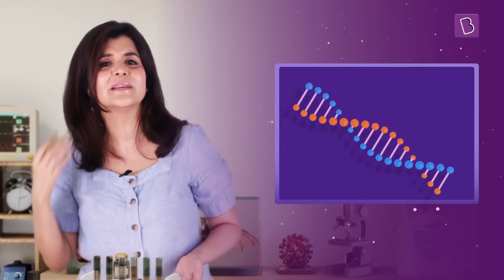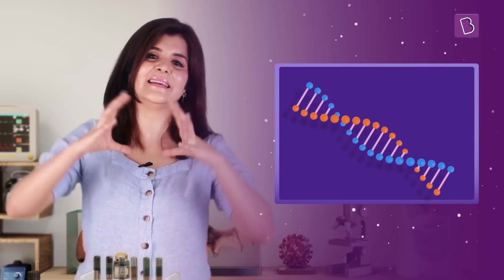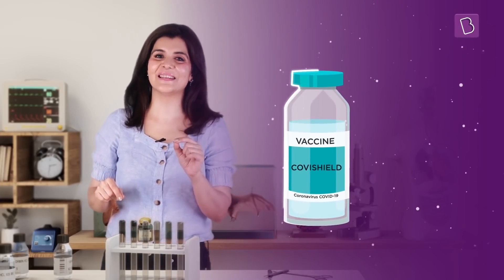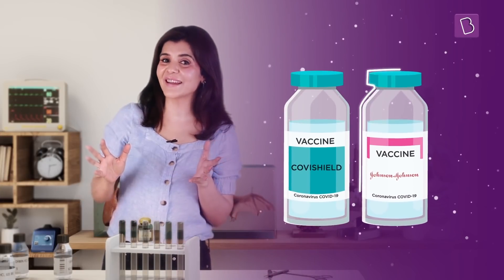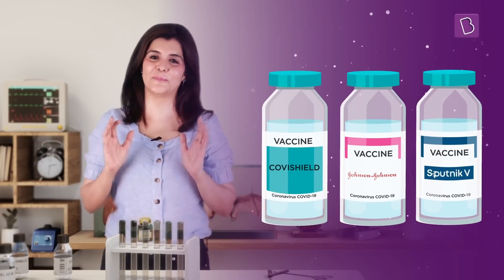A viral vector vaccine tends to be more stable for two reasons. First, it uses DNA instead of a super temporary mRNA. And second, this DNA is encased in a virus shell. That is why viral vector vaccines can be stored at more equitable temperatures. Covishield, the vaccine developed by Oxford AstraZeneca, the Johnson & Johnson vaccine, and Sputnik V made in Russia have all used this approach.